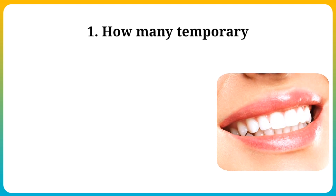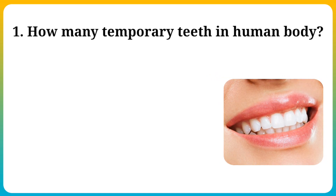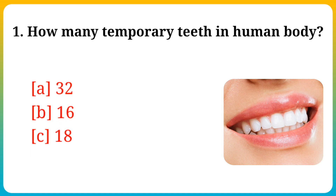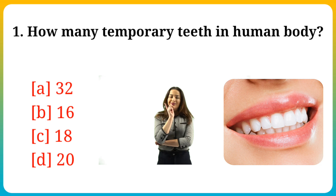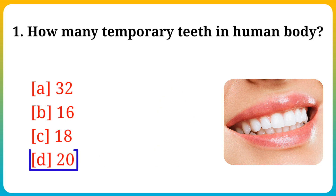Question number 1. How many temporary teeth are in the human body? Option A: 32, B: 16, C: 18, D: 20. Answer is option D: 20.